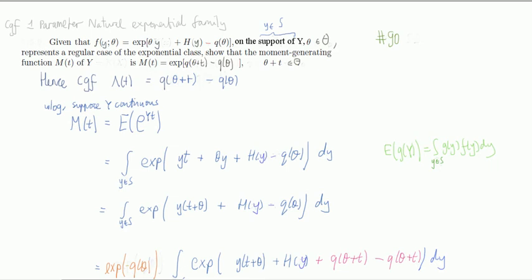Hi guys, today we're going to look at a result that links many of the common distributions that we see. Many of the distributions, continuous and discrete, that we see in a course, like Poisson, exponential, geometric, gamma, and so on, belong to the exponential family of distributions.